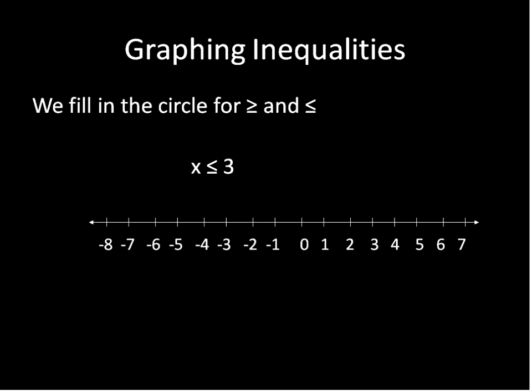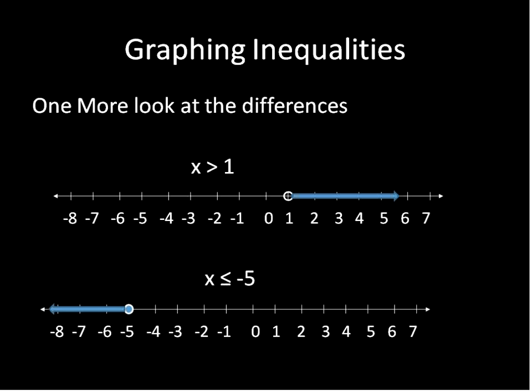Let's do one with less than or equal to. X is less than or equal to 3. I'm going to draw a filled in circle at the point positive 3 and I'm going to draw my arrow to represent everything less than that number. So the difference is that with the less than or equal to and greater than or equal to, make sure to fill in that circle. Otherwise, same basic things.